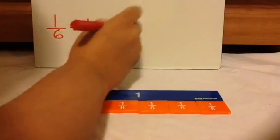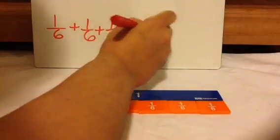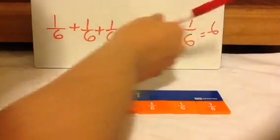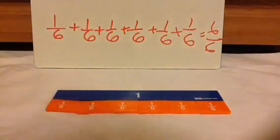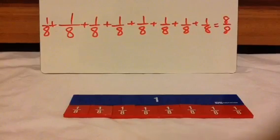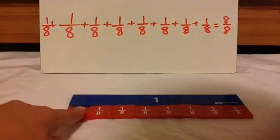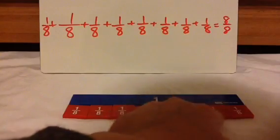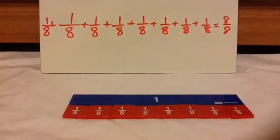1 sixth plus 1 sixth plus 1 sixth plus 1 sixth plus 1 sixth plus 1 sixth equals 6 sixths. So hopefully you're picking up on the pattern now. I went ahead and wrote this one out so you could see: 1 eighth plus 1 eighth plus 1 eighth plus 1 eighth plus 1 eighth plus 1 eighth plus 1 eighth plus 1 eighth equals 8 eighths.